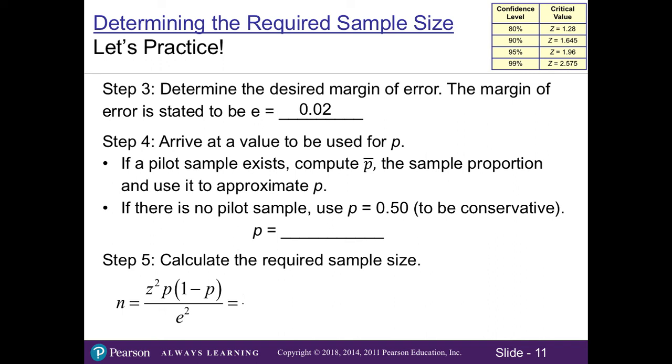However, if there is no pilot sample, we're going to use a p of 0.5 to be conservative. In other words, we're saying there's a 50-50 chance. So our p in this story, because we do not have a pilot sample, will be 0.5. So now we can go ahead and plug in all of our variables. We'll take 1.96 squared times 0.5 times 0.5 again, because 1 minus 0.5 is 0.5, and then divide it by our margin of error of 0.02 squared.